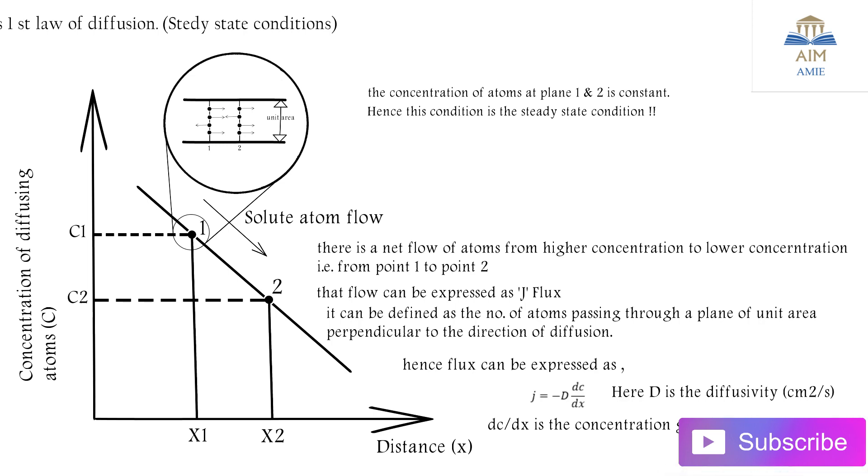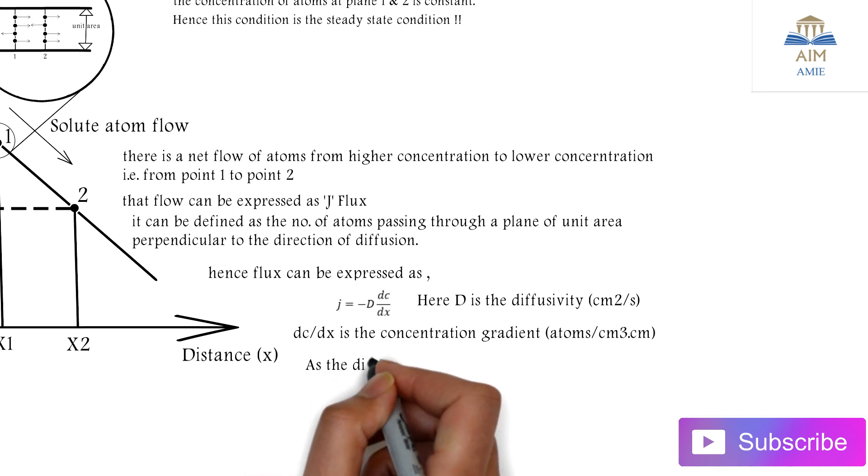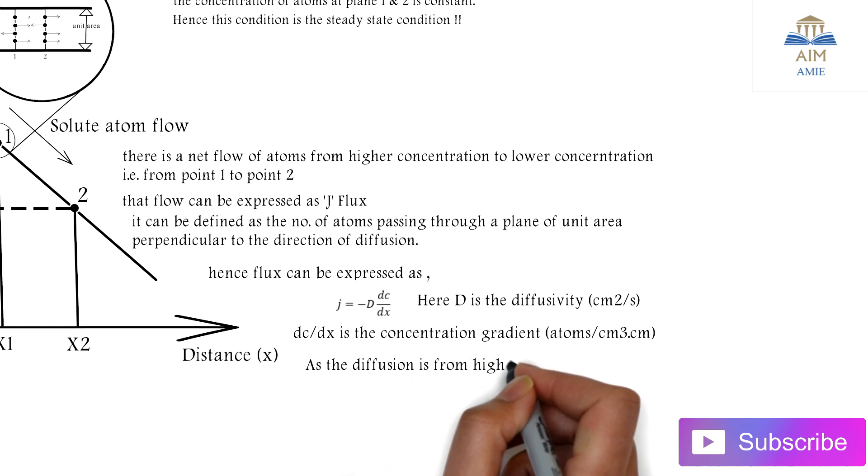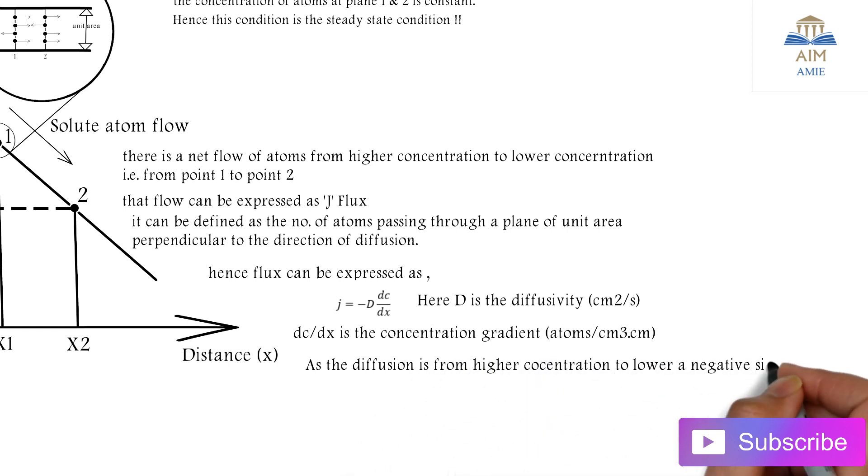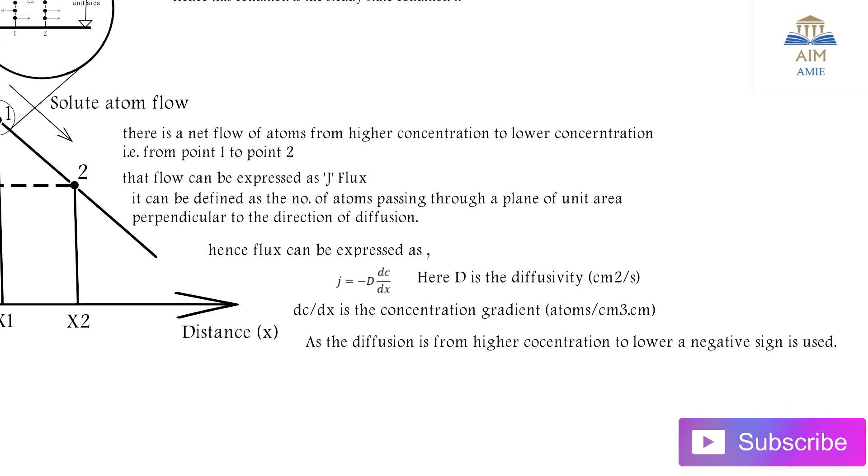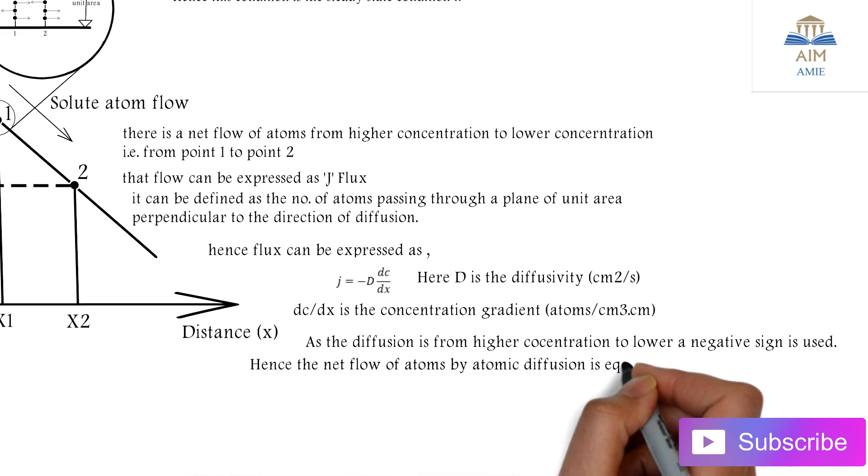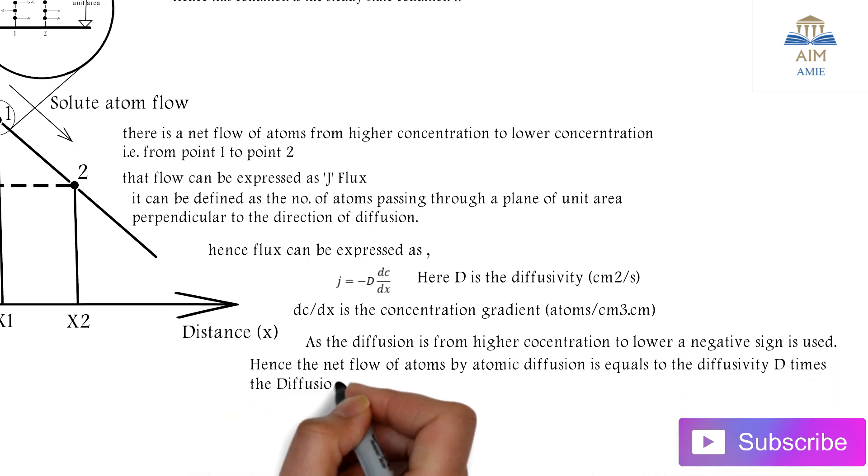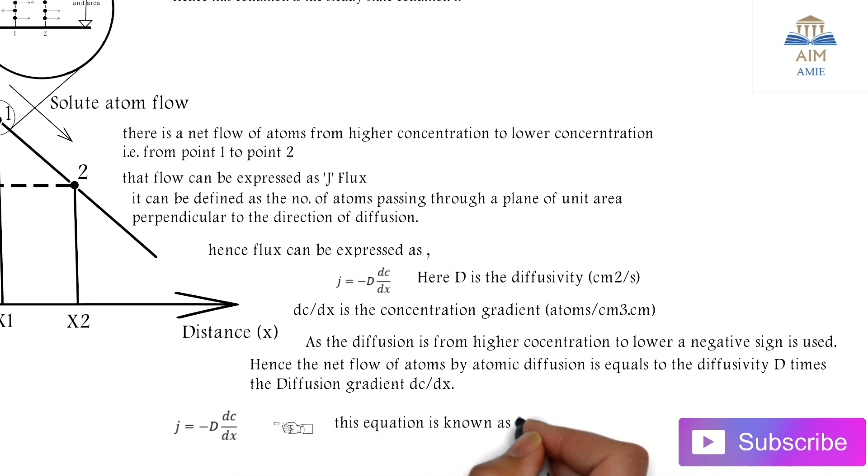Which is atoms per cubic centimeter per centimeter. As diffusion is from higher concentration to lower concentration, the negative sign is used. Hence the flow of atoms by atomic diffusion equals the diffusivity D times the diffusion gradient, that is dC by dX, which gives us the formula J equals minus D into dC by dX. This equation is also known as Fick's first law of diffusion.